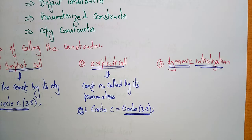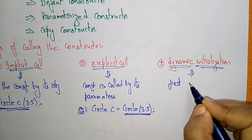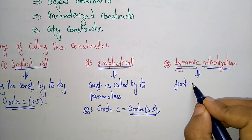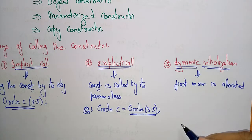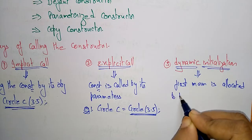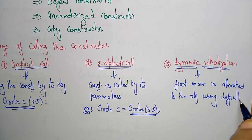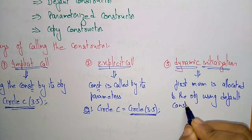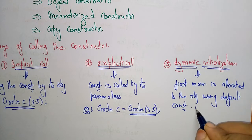Dynamic initialization means first, memory is allocated to the object using the default constructor. After allocating the memory, the parameterized constructor is then called to initialize the data members.